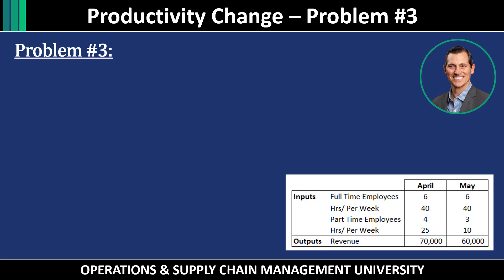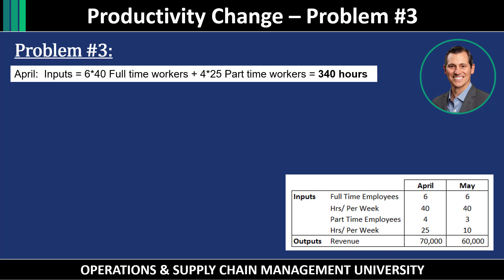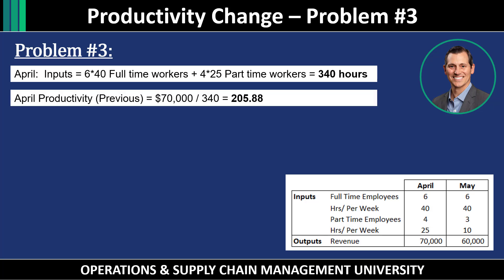All inputs — full-time and part-time employees — are shown for both April and May. Outputs were $70,000 in April and $60,000 in May. For April productivity: 240 hours of full-time workers plus 100 hours of part-time workers gives 340 total hours. April productivity is $70,000 divided by 340 hours, which equals $205.88 per hour.